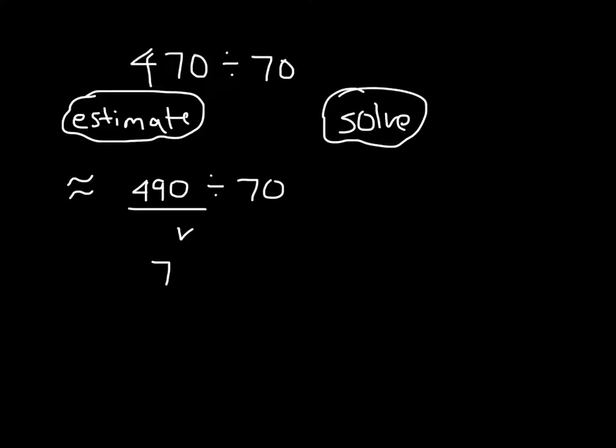We can use this estimate to help us with our solution using a standard algorithm. Remember, it's 470 divided by 70. It looks like we went up from the 470 to the 490. That means that this 7 would actually be too high of an estimate. So we can't just choose 7 because then it would be 470 minus 490 and that would be too much.